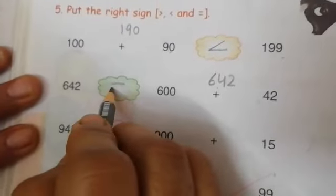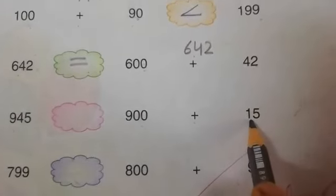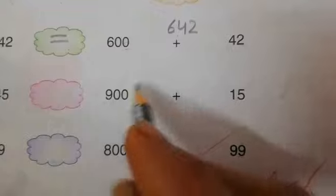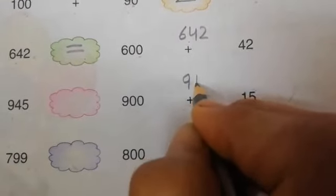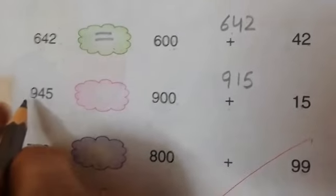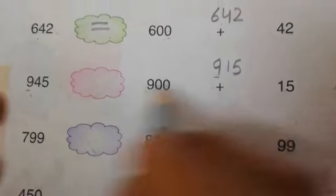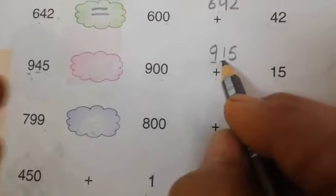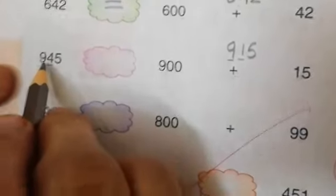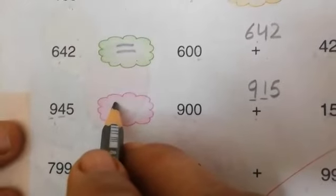945 and 900 plus 15. First we will add 900 plus 15: that is 915, and this is 945. Both hundreds are 900. Now what we have to check? Tens: 4 tens and 1 ten. Which tens is greater? 4. It means 945 is greater than 915.